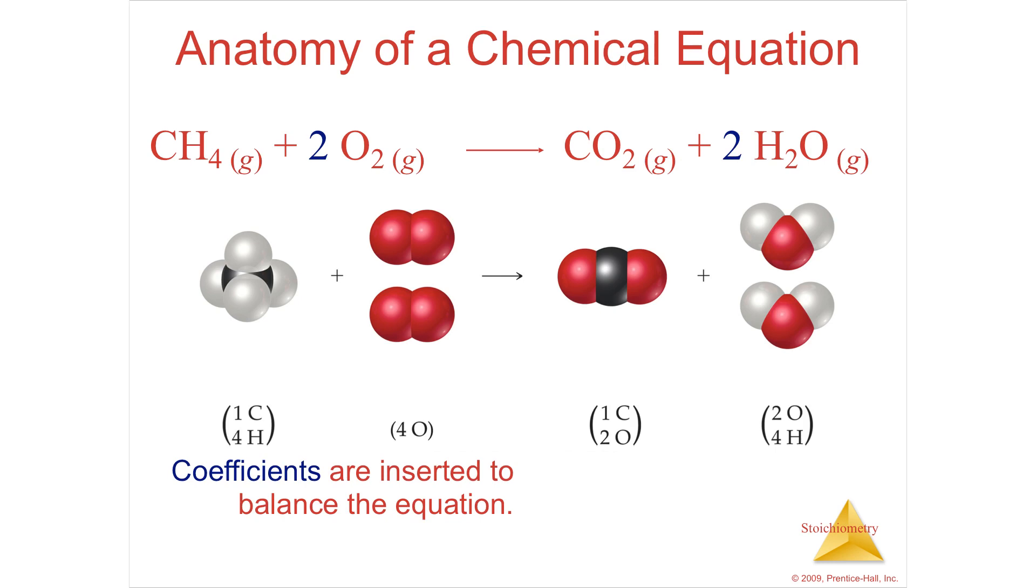Coefficients tell you how many molecules are required in order for all the atoms to be the same on both sides. So instead of just oxygen O2, if I'm going to need two oxygens just for the carbon dioxide plus two oxygens for the two water molecules, then I must need two molecules of oxygen.